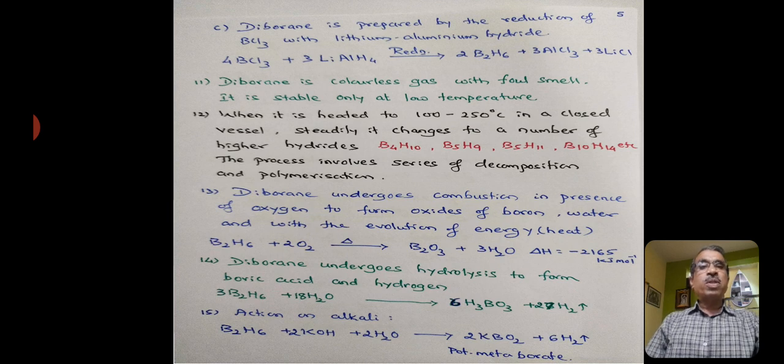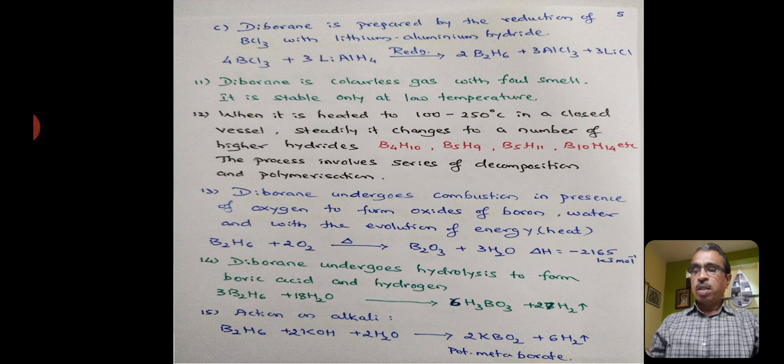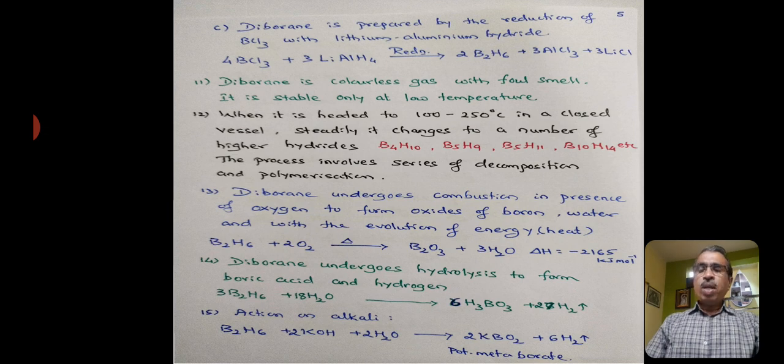Diborane undergoes combustion in presence of oxygen to form oxides of boron, water, and with the evolution of heat energy. I have shown the equation: B2H6 plus 3O2 on heating gives B2O3 plus 3H2O and releases 2165 kilojoules per mole of heat energy, which is much higher than the combustion of carbon. C plus O2 gives CO2, and delta H of this reaction is 393.5 kilojoules. Diborane undergoes hydrolysis to form boric acid, H3BO3, and hydrogen.